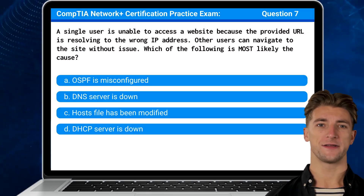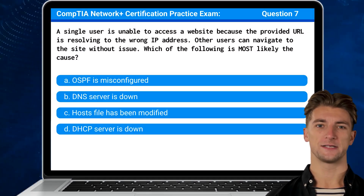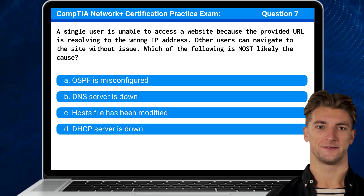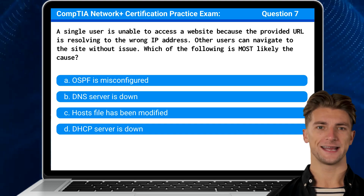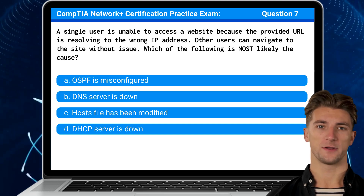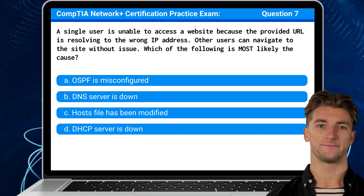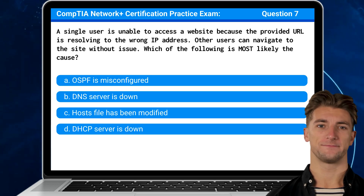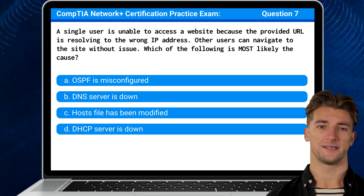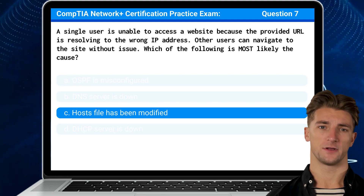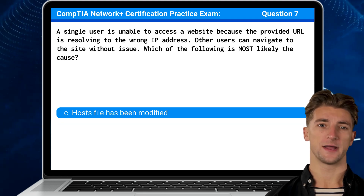Question 7. A single user is unable to access a website because the provided URL is resolving to the wrong IP address. Other users can navigate to the site without issue. Which of the following is most likely the cause? The answer is C: the hosts file has been modified.